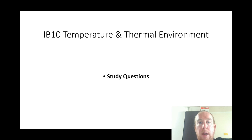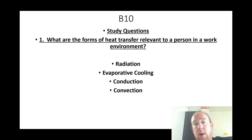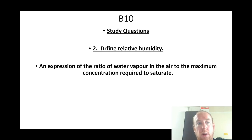Thermal environment and temperature. What are the forms of heat transfer related to a person and work environment? Radiation, evaporative cooling, conduction, and convection. Define relative humidity: an expression of the ratio of water vapour in the air to the maximum concentration required to saturate it.